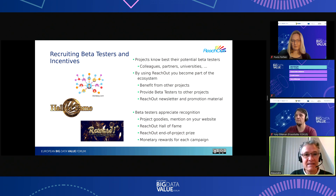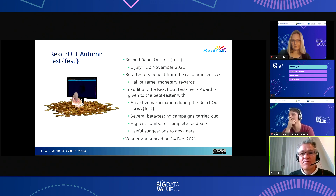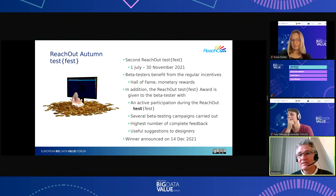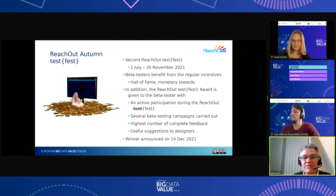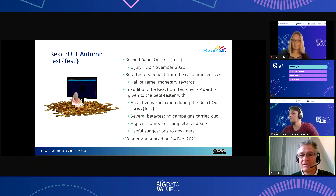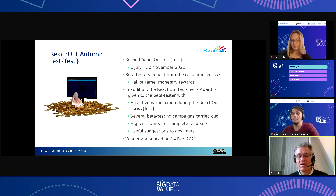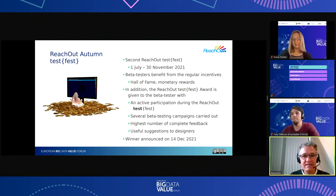We've just held the Reach Out Autumn Test Fest — our second virtual event — where beta testers benefit from regular incentives including the Hall of Fame and monetary rewards, plus a special Test Fest award given to the most active beta tester during the period. The winner will be announced in a short webinar on the 14th of December 2021.